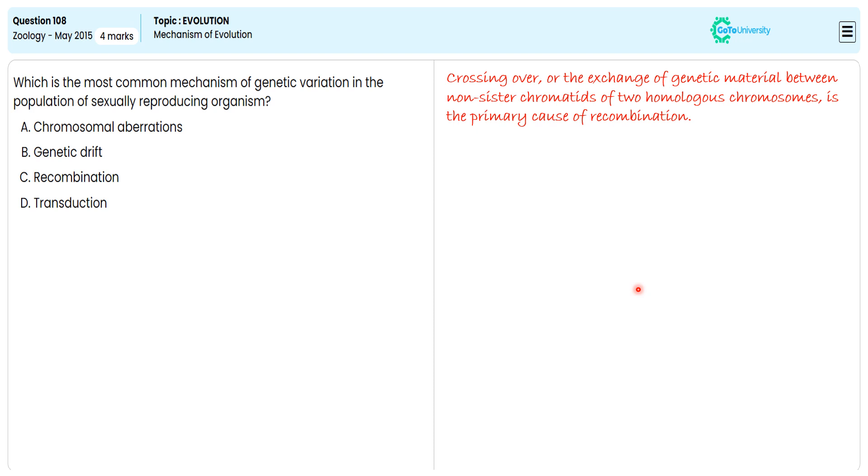A form of mutation known as chromosomal aberration occurs when a section of a chromosome is exchanged, erased, or duplicated across non-homologous chromosomes.